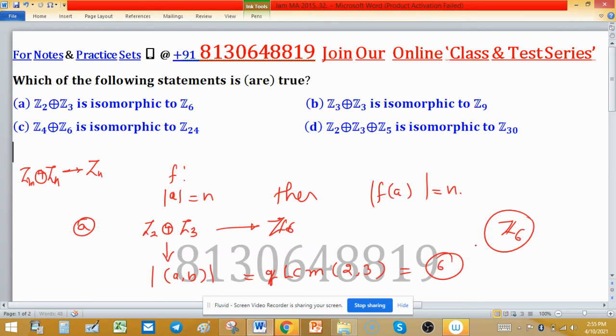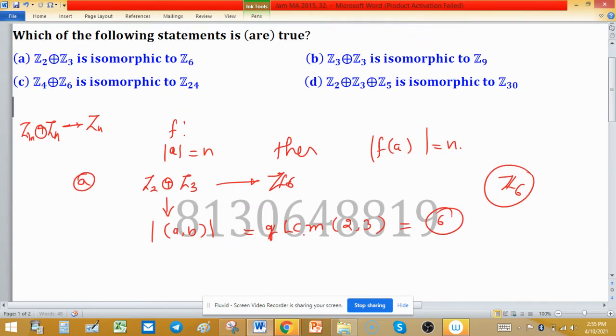For option B, Z3 direct sum with Z3, the LCM of 3 and 3 is 3. But Z9 has order 9, so this is not isomorphic.